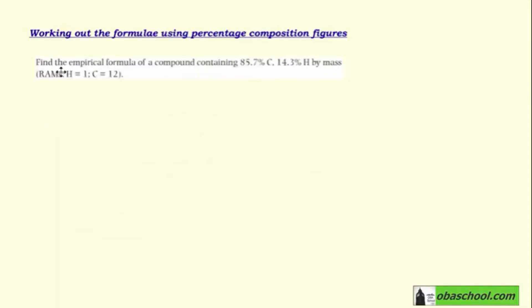Find the empirical formula of a compound containing 85.7% carbon and 14.3% hydrogen by mass. The relative atomic masses are H = 1 and C = 12. We need to find the empirical formula of this compound.